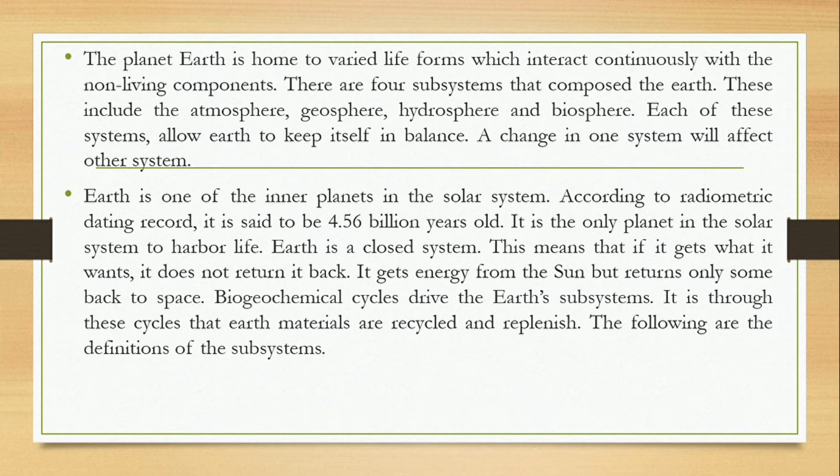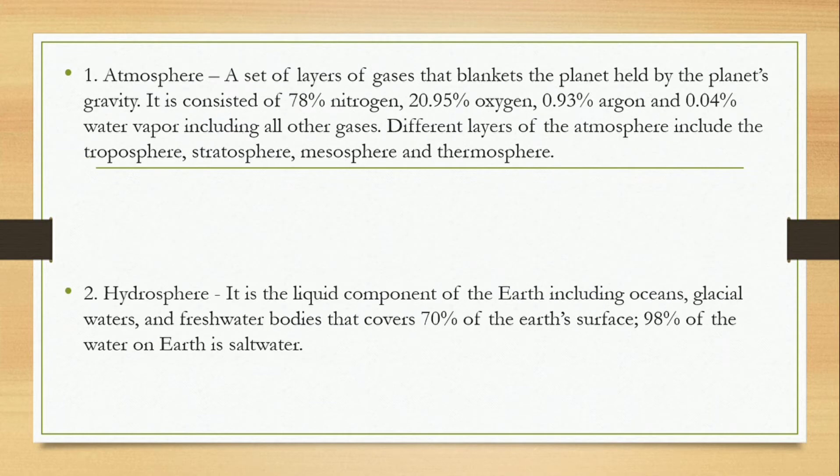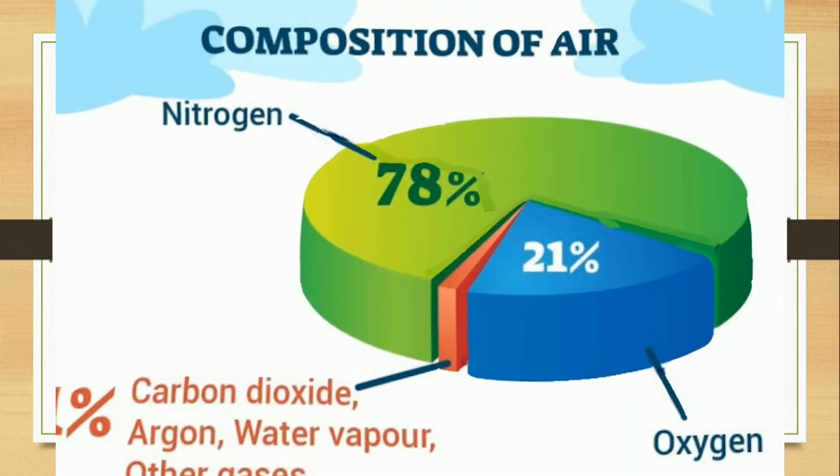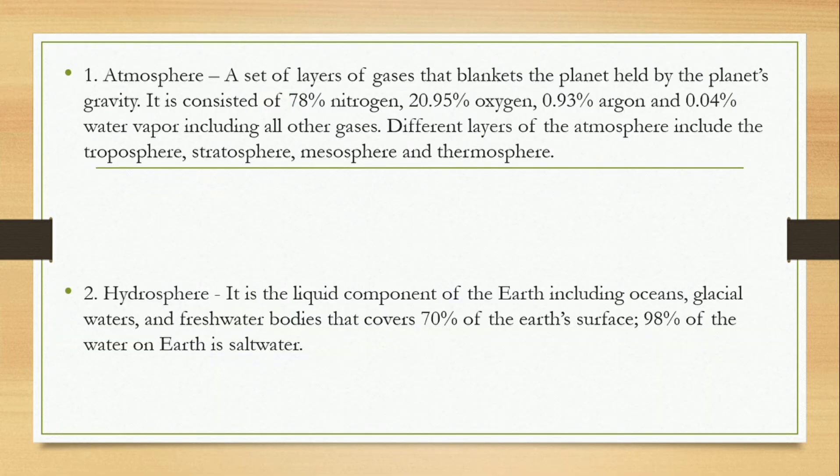The following are the definitions of the subsystems. First is atmosphere, a set of layers of gases that blankets the planet held by the planet's gravity. It is consisted of 78% nitrogen, 20.95% oxygen, 0.93% argon, and 0.04% water vapor including all other gases.